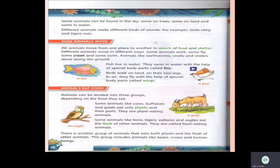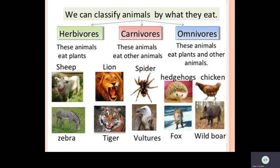Some new terms to learn and remember: plant-eating animals are called herbivores, flesh-eating animals are called carnivores, and animals which eat both plants and animals are called omnivores. Animals are divided into these three categories according to what they eat — herbivores, carnivores, omnivores.